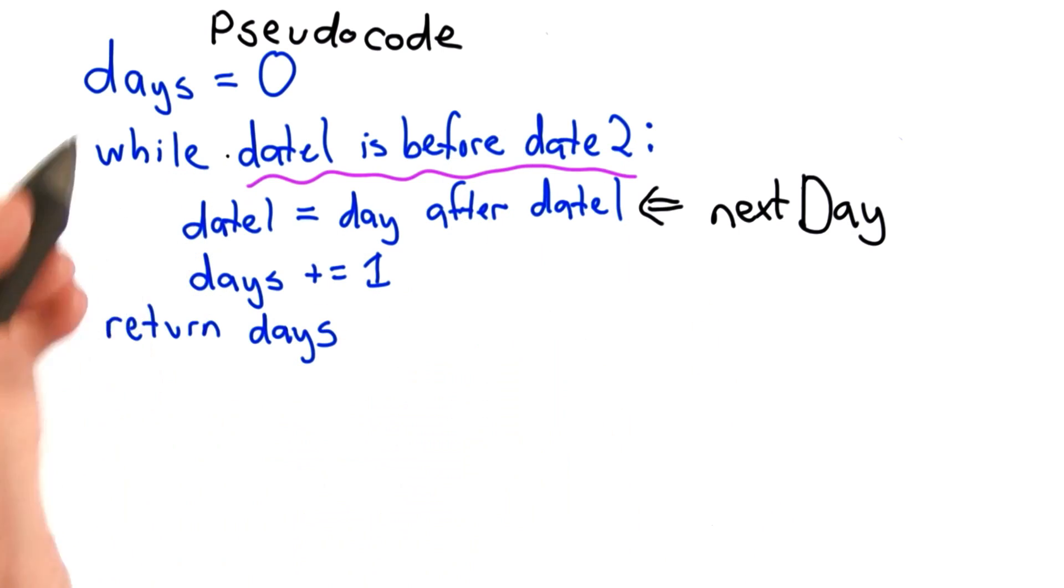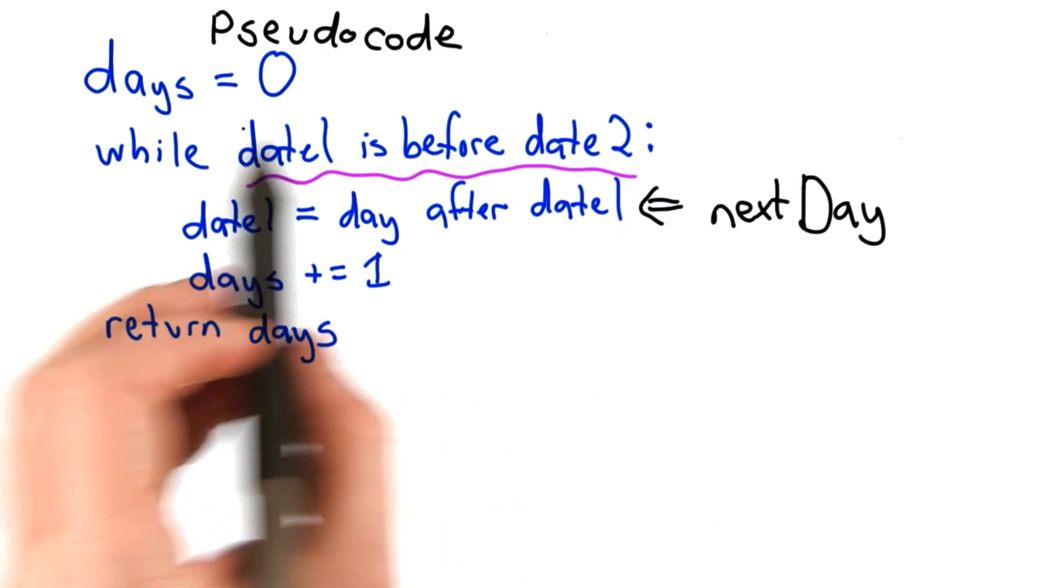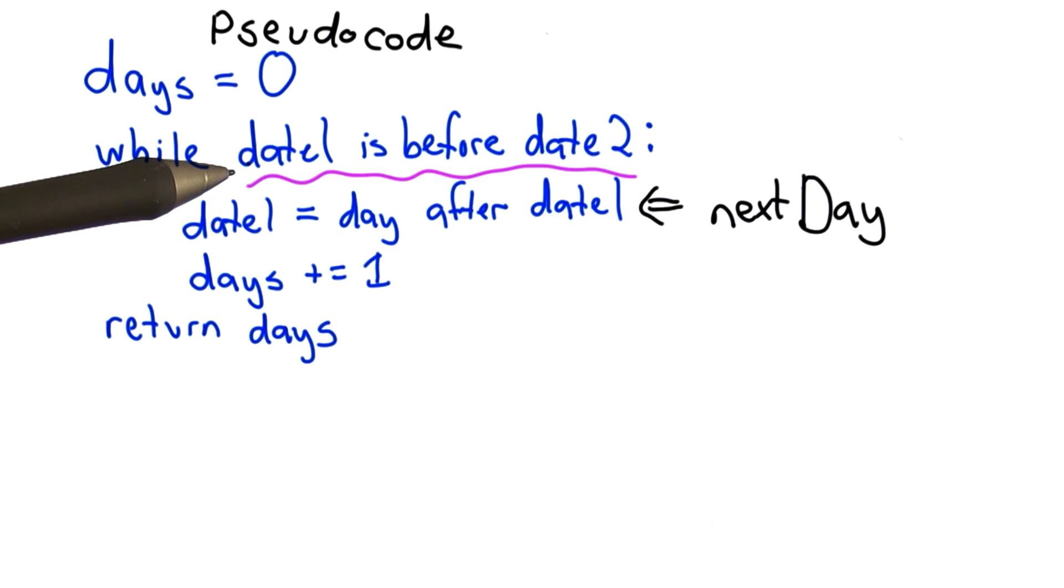If we're going to write a helper procedure, we should write something that makes it easier to do this date comparison. And that's going to be a lot better to do as a helper procedure than to try to do that inside the days between dates code. Knowing whether a date is before another date is something that is possibly useful in other contexts.